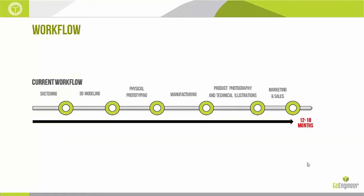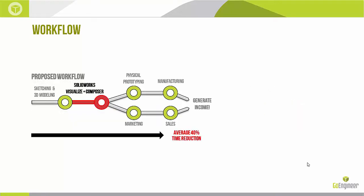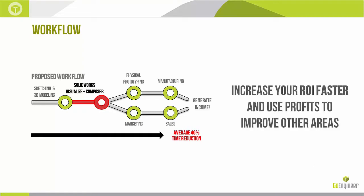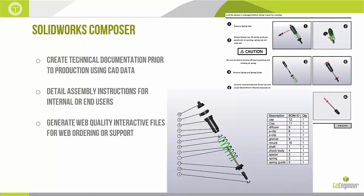The current workflow in your process may be something like this: you sketch something up, you 3D model it, you make sure it fits on your part, then once you've got that down you manufacture it, CNC cut it or send it out to get made. Photographs are usually taken if it's something you're going to market and sell, and then it goes to marketing and sales — that can take an extremely long time. What we propose is to add in the functionality of Visualize and Composer early on in the process so you can start the marketing and sales delivery to customers while you're generating the prototypes and manufacturing the components, thus shortening your overall time to production and increasing return on investment. That's the ideal scenario.